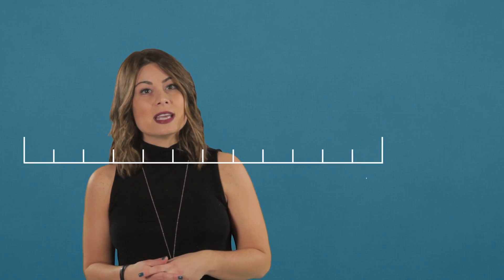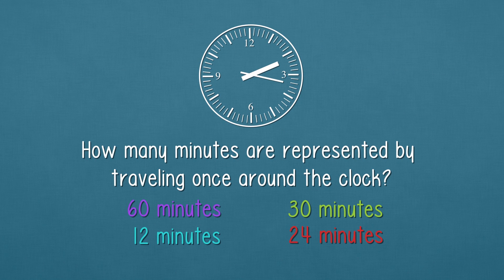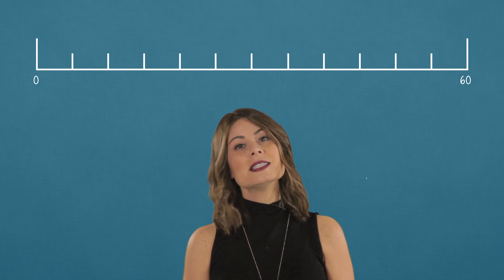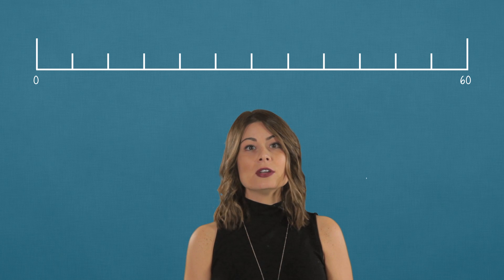Now we have to label our number line. When we look at a clock, how many minutes are represented by traveling once around the clock? Every time the minute hand goes around the clock, we've passed one hour. And in one hour, there are 60 minutes. So this number line will represent 60 minutes. Let's put zero here and 60 here. And on a clock, each of our tick marks represents five minutes.